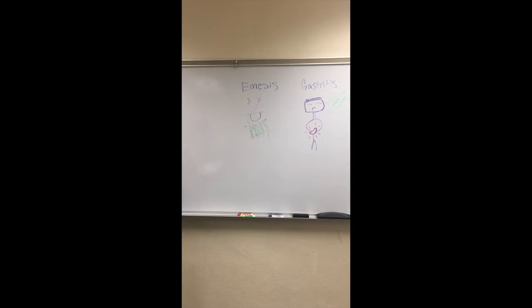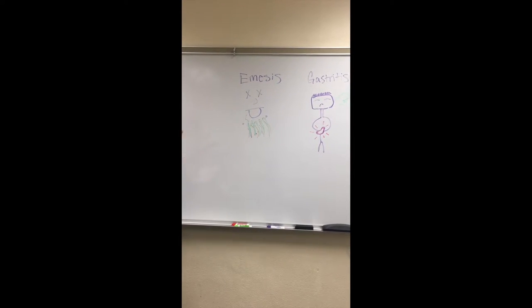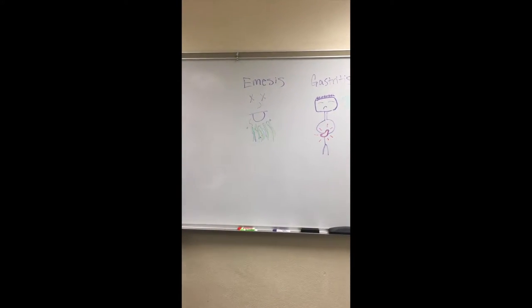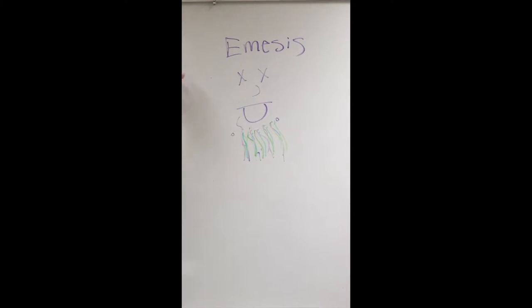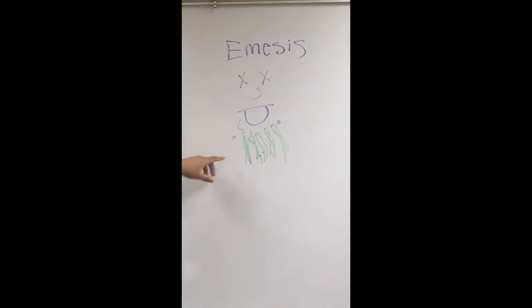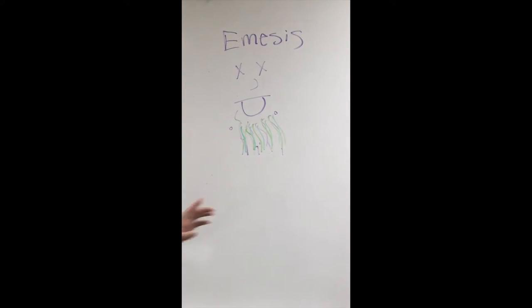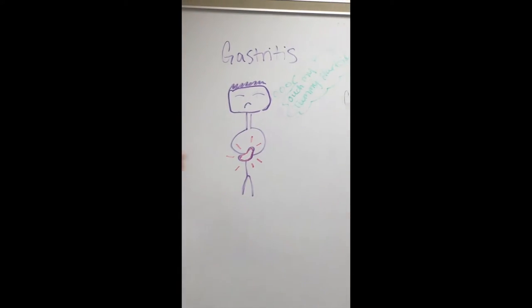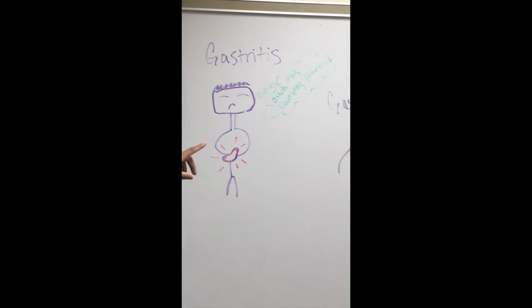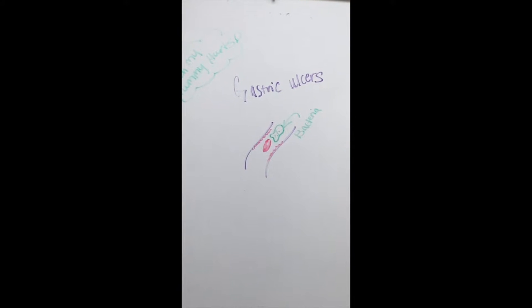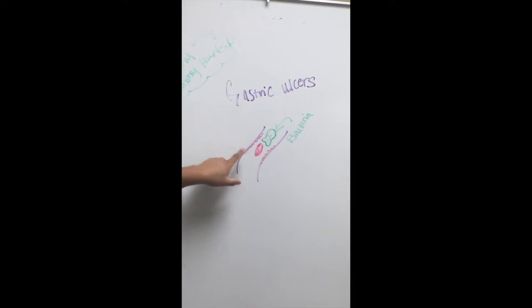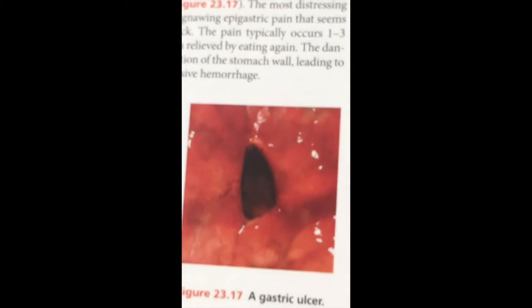For the clinical problems of the stomach, there are three outlined. Emesis is basically vomiting. Gastritis is inflammation of the stomach lining. And gastric ulcers are erosion within the stomach caused by bacteria — a hole in the stomach lining and an erosion on the stomach walls. This causes weak spots, which can be very painful because the stomach is very acidic.